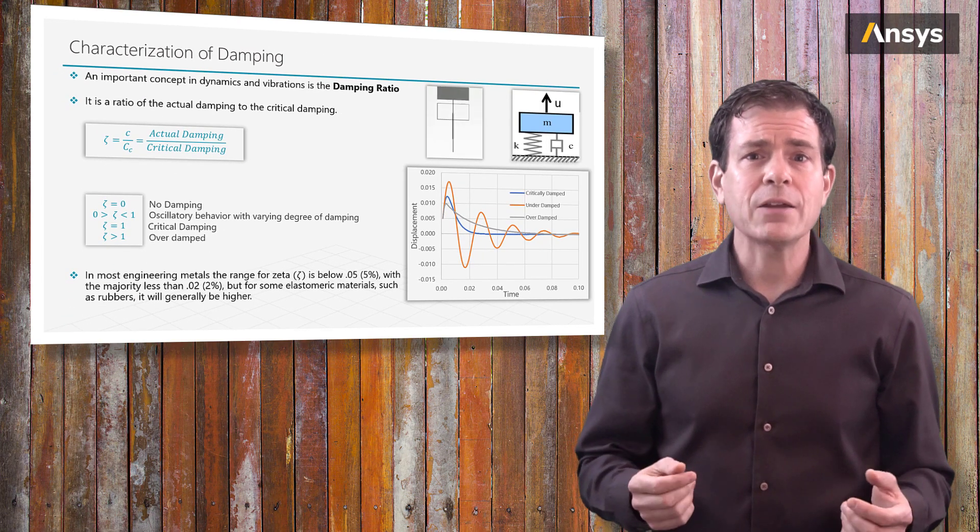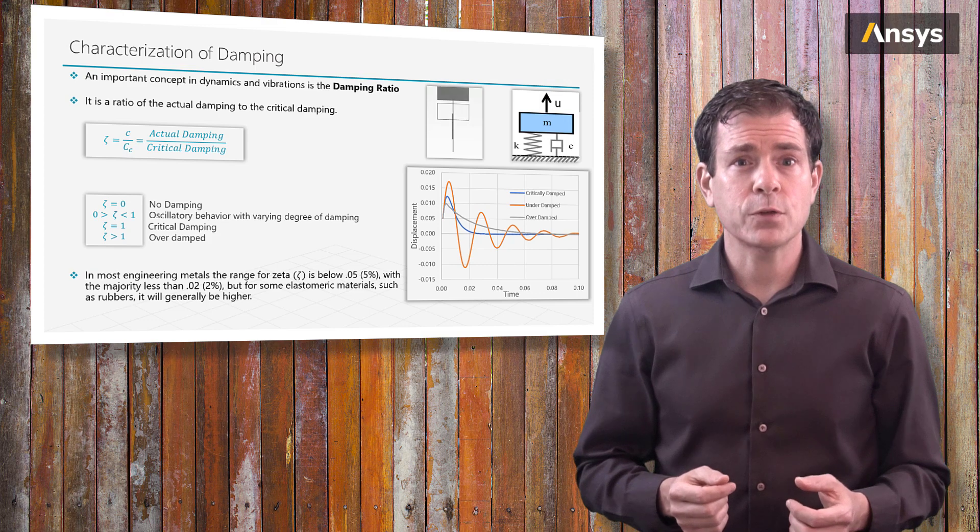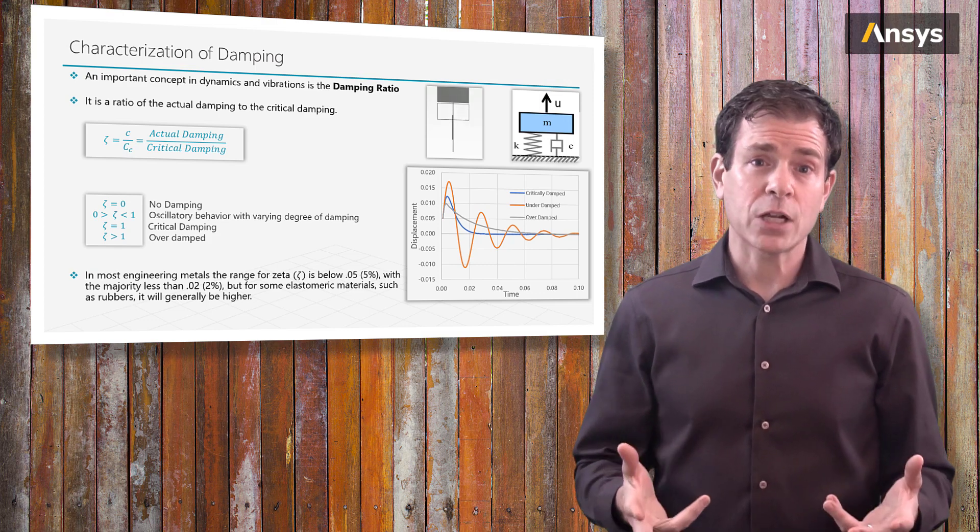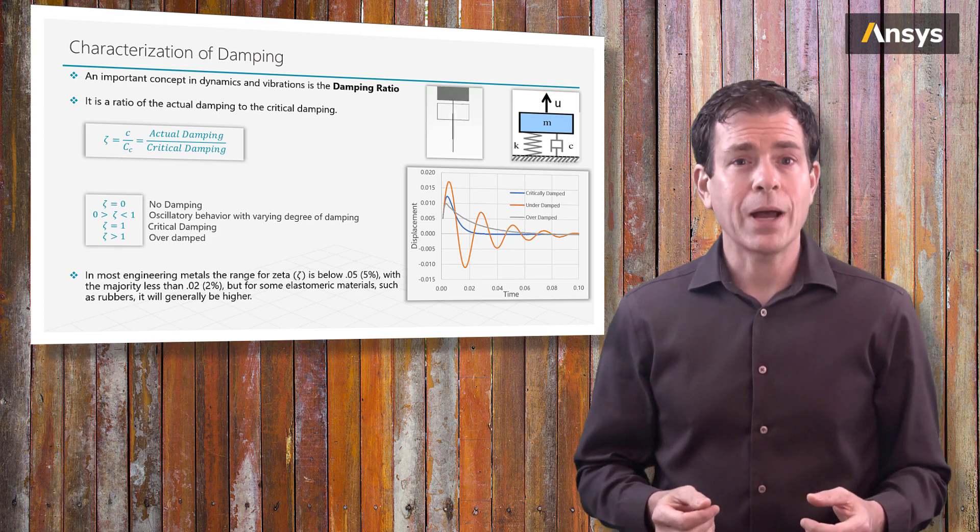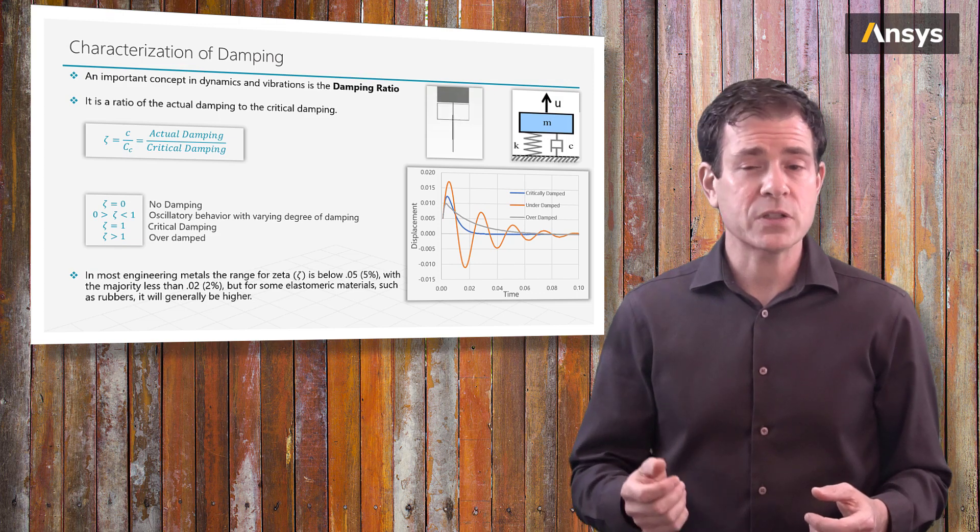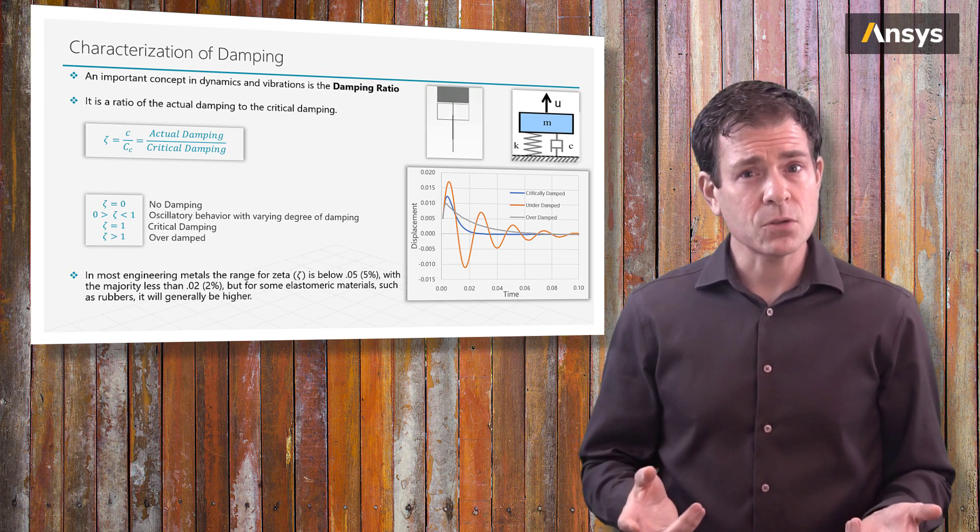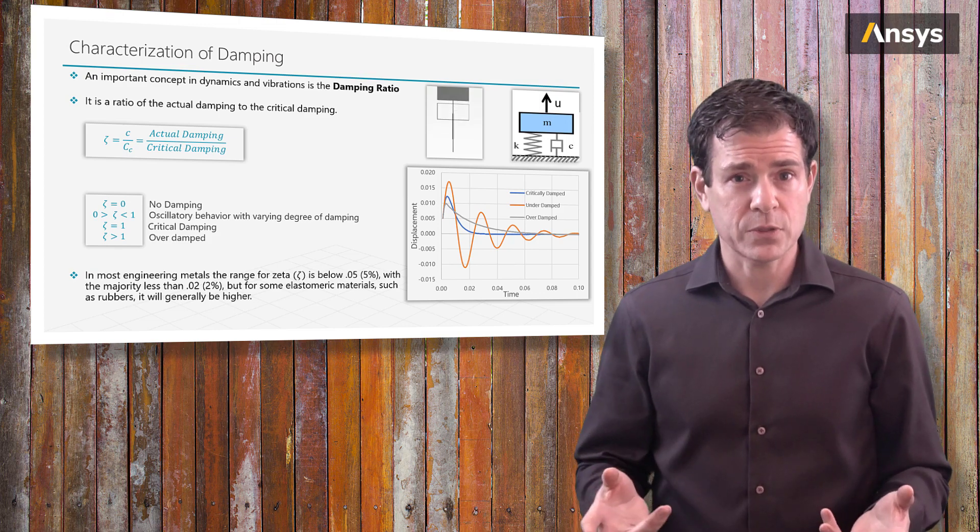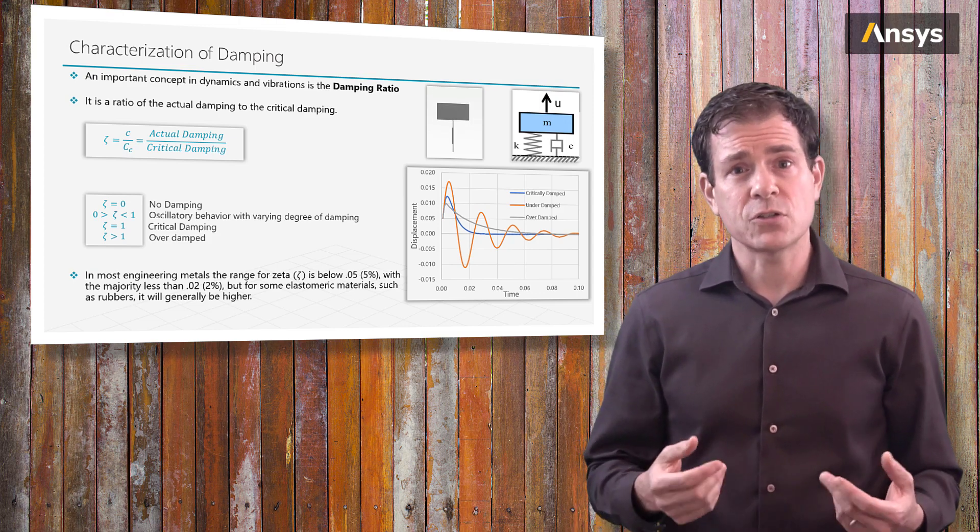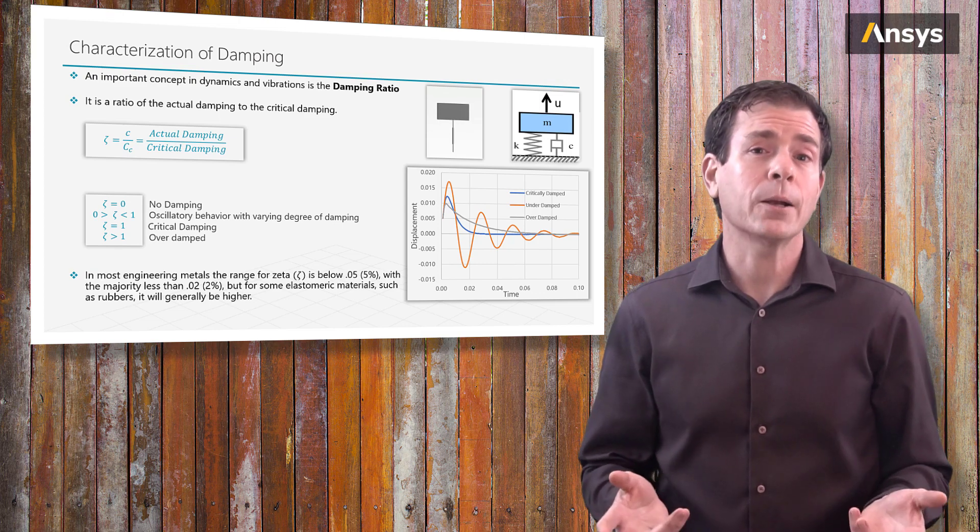So what is the value to specify for the damping ratio for your simulation? In general, most engineering metals will have a damping ratio below 0.05 or 5%, with the majority typically closer to or less than 0.02 or 2%. But for some elastomeric materials such as rubbers, the ratios will generally be higher.